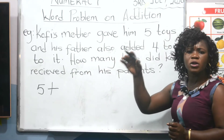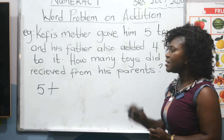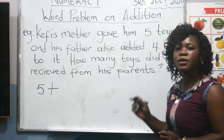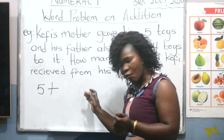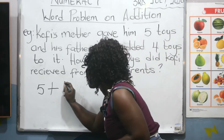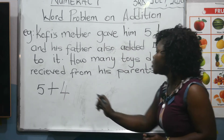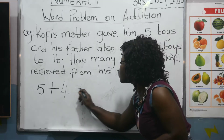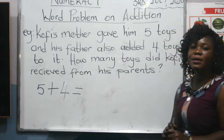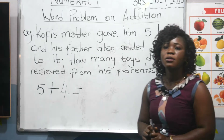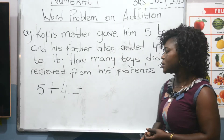So Kofi was already having five toys, then his father added four toys to it. So five plus, which number? Four. Yes, so you write your four. So five plus four, then you bring your equal to sign. Then let's calculate. Not to waste time, we have our counters at our various houses.